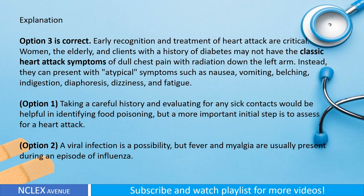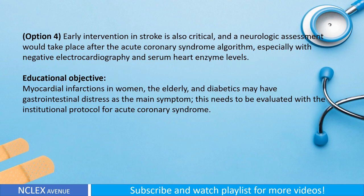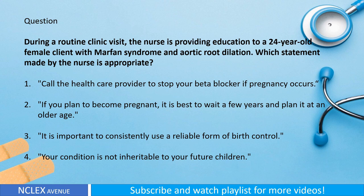Option one: Taking a careful history and evaluating for sick contacts would be helpful in identifying food poisoning, but a more important initial step is to assess for a heart attack. Option two: A viral infection is a possibility, but fever and myalgia are usually present during an episode of influenza. Option four: Early intervention in stroke is also critical; a neurologic assessment would take place after the acute coronary syndrome algorithm, especially with negative electrocardiography and serum heart enzyme levels. Educational objective: Myocardial infarctions in women, the elderly, and diabetics may have gastrointestinal distress as the main symptom and must be evaluated with the institutional protocol for acute coronary syndrome.